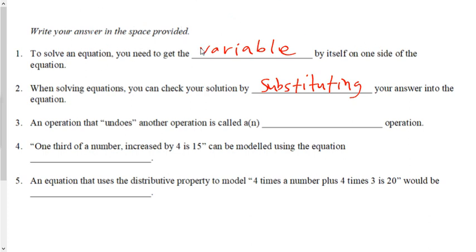Question 3, an operation that undoes another operation is called a blank operation. What do you think, Deacon? Correct. An opposite operation. So in the case of x minus 1 equals 3, if I add 1 to both sides, adding 1 to both sides undoes the minus 1 from both sides.